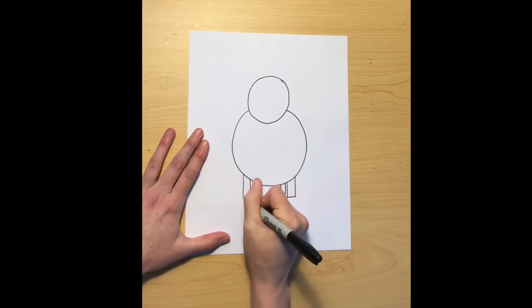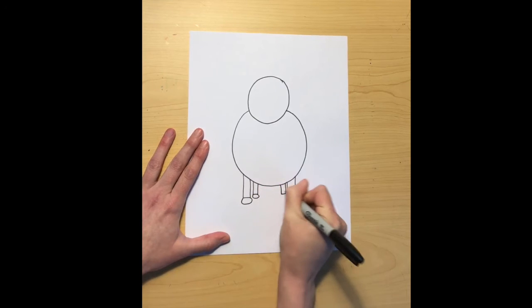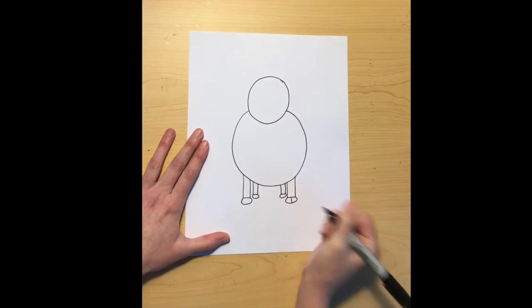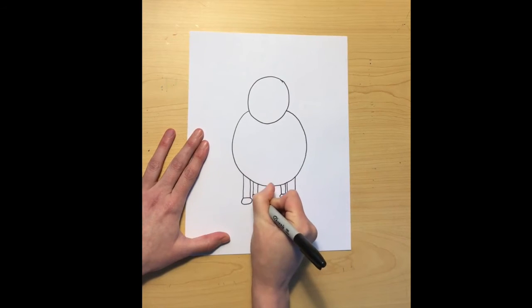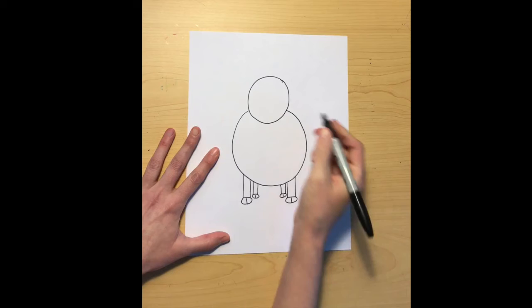To add hooves I'm going to do kind of a wide U-shape, or maybe a letter C if you turned your paper sideways. At the bottom of that shape I'm going to add a line to create hooves on each one of our feet.